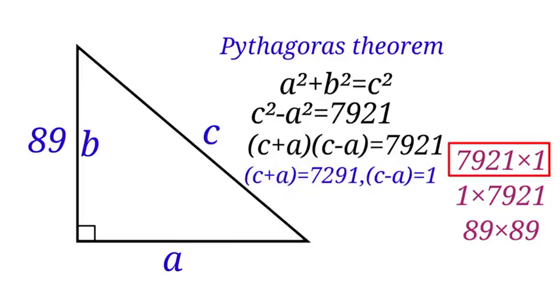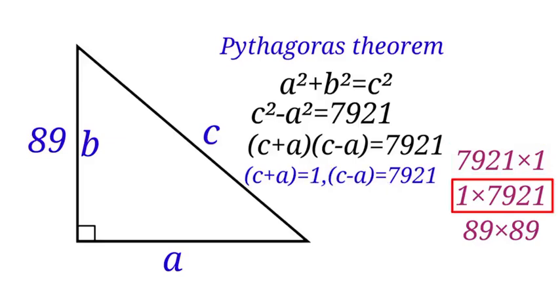First, for the first one, C plus A equals to 7,921, and C minus A equals to 1. C plus A is greater than C minus A, so this satisfies our condition. Let us check the second one. C plus A equals to 1, and C minus A equals to 7,921. This does not satisfy our condition because C plus A is less than C minus A.